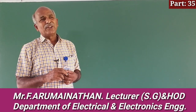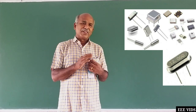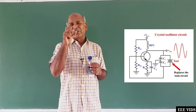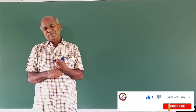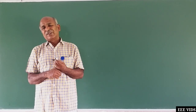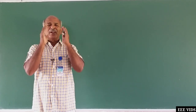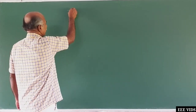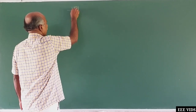Now let's talk about crystal oscillators. In crystal oscillators, one crystal is used. The crystal is made of quartz material. Two plates are placed in the quartz material, and the circuit is called a crystal oscillator.